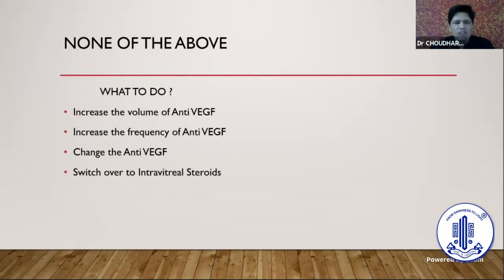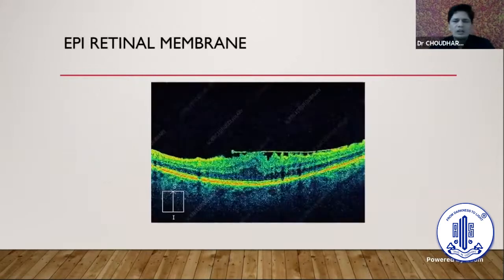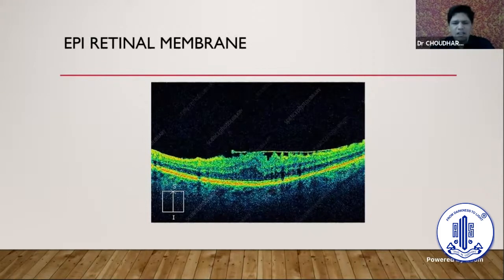What works in more cases is switching over to intravitreal steroid. When not responding to anti-VEGF we can switch to intravitreal steroids, and many options are available. I always use and recommend a labeled, FDA-approved dexamethasone. As far as anatomical culprits are concerned, epiretinal membrane will make conventional treatment ineffective — hardly any anti-VEGF or intravitreal steroid will work in that situation.